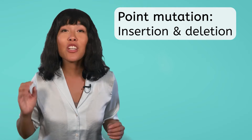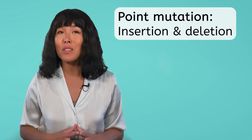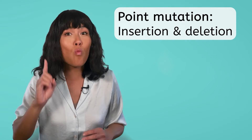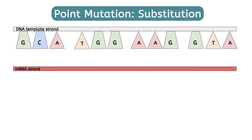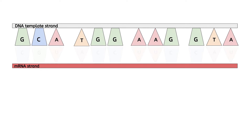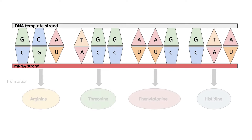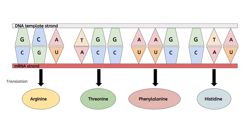Point mutations also include insertions or deletions, where an extra base gets added into the DNA strand or one gets completely deleted. These are especially harmful because they end up affecting more than one amino acid in a domino effect that ripples all the way down the amino acid chain. We'll start with a set of four codons on our DNA template. We would transcribe the mRNA strand using our base pairing rules, then translate those mRNA codons into amino acids. We end up with arginine, threonine, phenylalanine, and histidine.